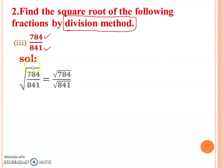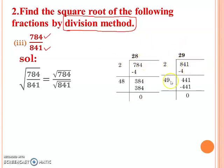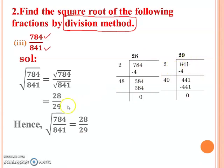Apply the square root, and by using the property, write it so square roots are applied separately to numerator and denominator. Then find the square root of 784 and the square root of 841 separately. Using the division method, the square root of 784 is 28 and the square root of 841 is 29. Put these values in place of 784 and 841.